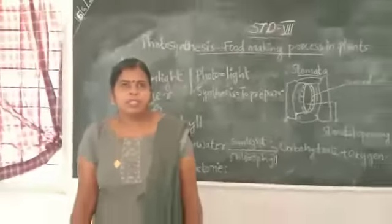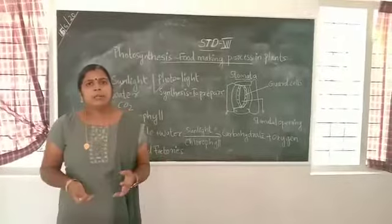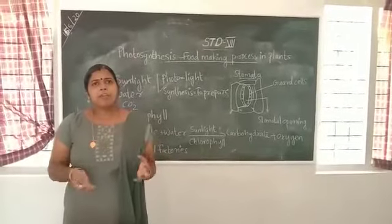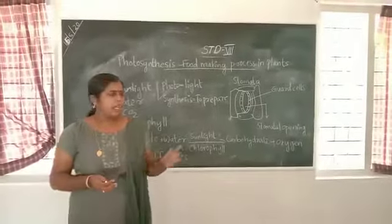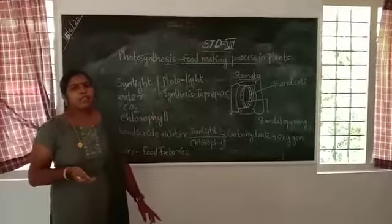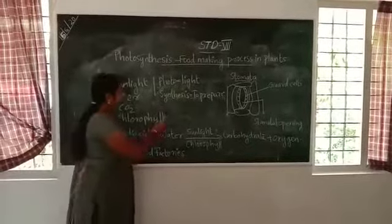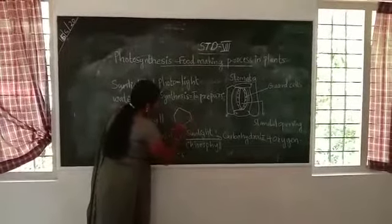In the previous class, we have already studied about cells. We know that buildings are made up of bricks. The basic structure of a building is brick. Similarly, our body is made up of tiny units called cells. This is the structure of a cell.